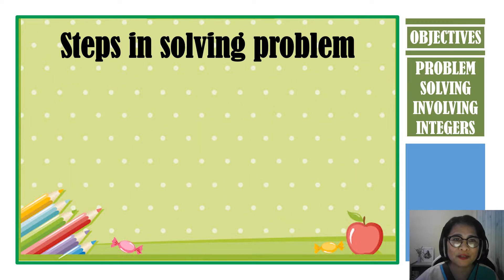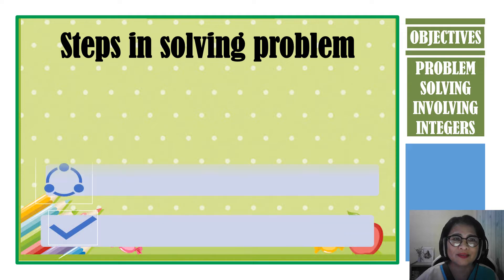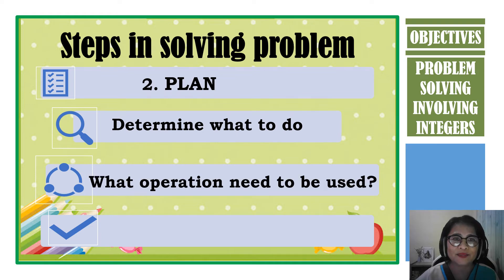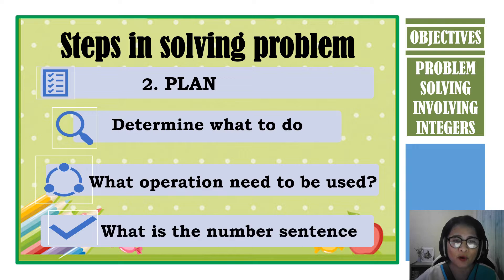The second step is to plan what to do to solve the problem. From the given information, the keywords, the pattern, and even drawing a model will help you determine what to do to solve the problem. And then decide what operation is needed to solve the problem. Then you can now make a number sentence for the problem.